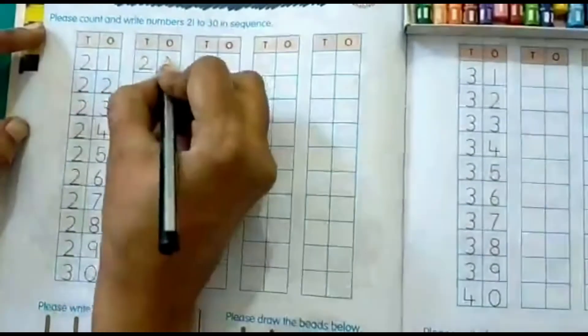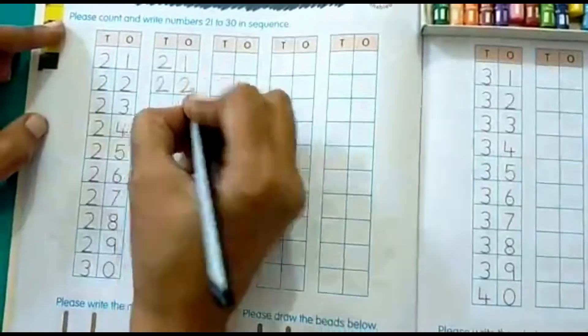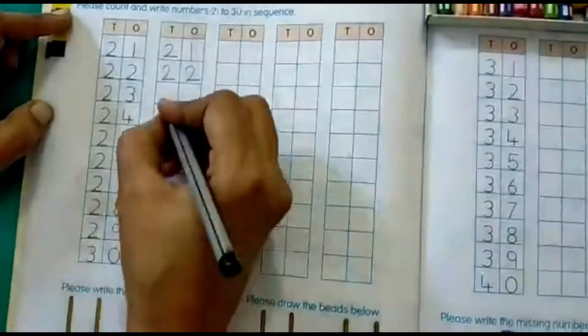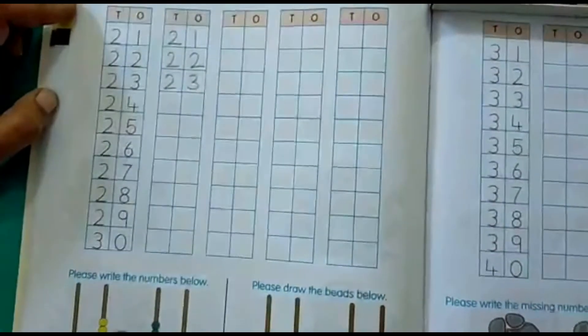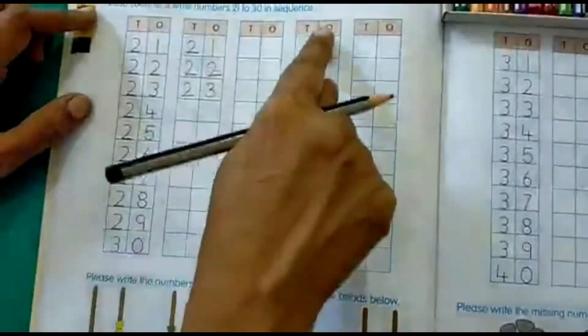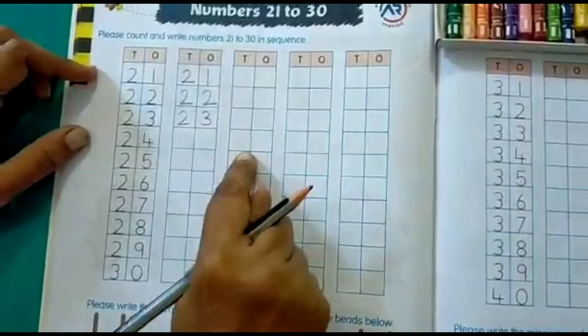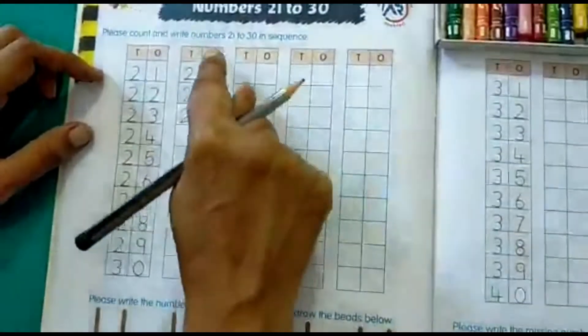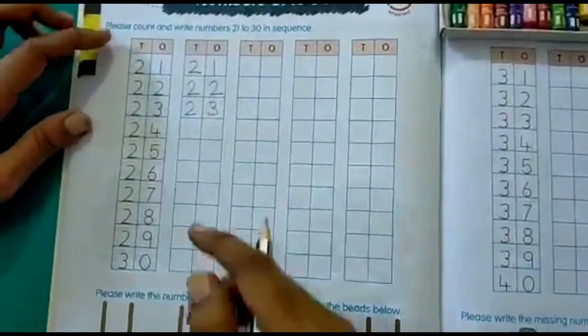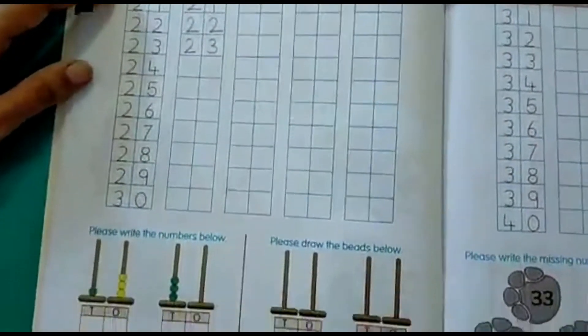So 2, 1, 21. 2, 2, 22. 2, 3, 23. In the same way, you have to write the numbers till 30 and you have to repeat it in these boxes also. So here you will write again 21, 22, 23. Okay, and when you are writing, please do not write 21, 21, 21. Write the numbers from 21 to 30, so then you will remember the correct order of the numbers. So this is the first activity that you need to complete.